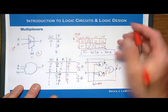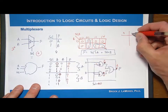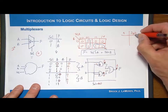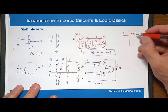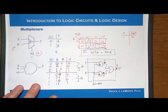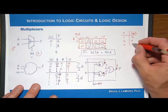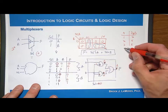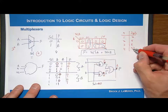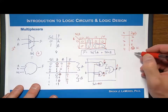For example: with N=1 select line, you support 2 inputs; with 2 select lines, up to 4 inputs; with 3 select lines, up to 8 inputs; and with 4 select lines, up to 16 inputs, and so on.